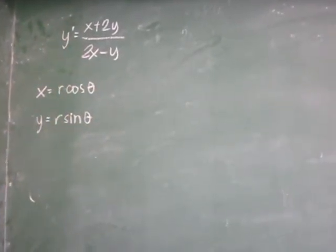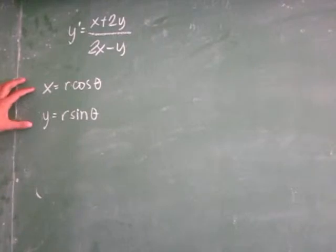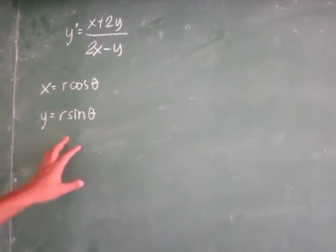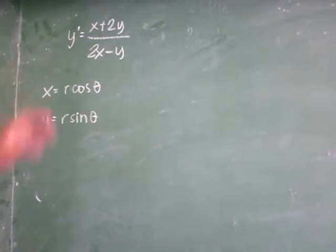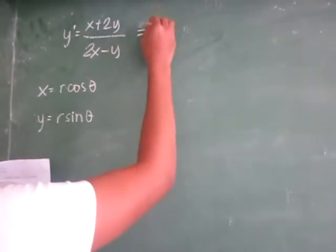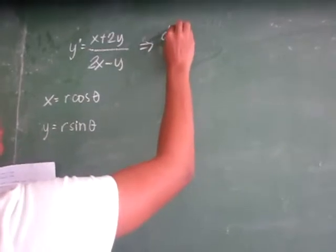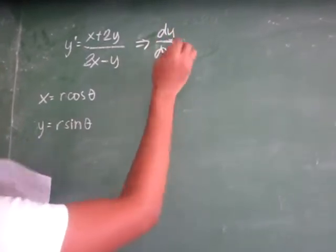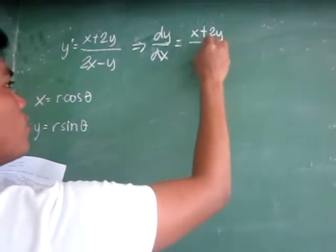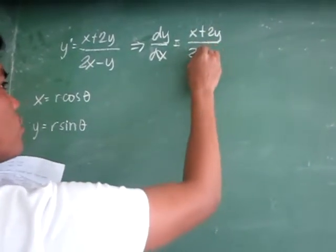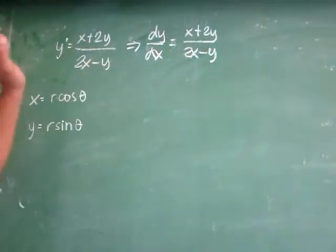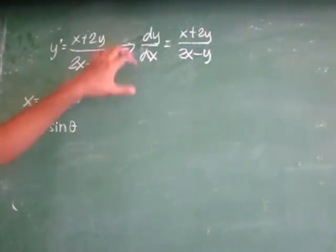As defined by the problem in the book, we need to substitute x equal to r cosine theta and y equal to r sine theta into this original equation. Since y' is equal to dy over dx, the question is: what are we going to substitute for dy and dx?